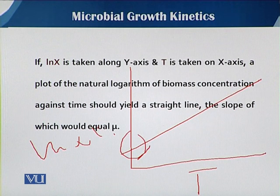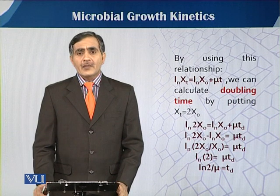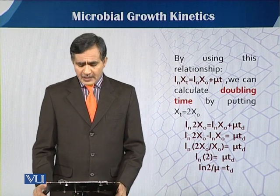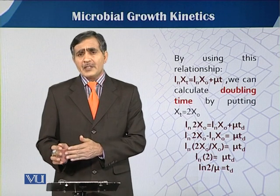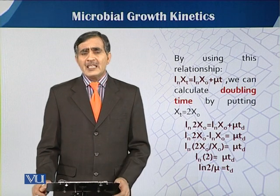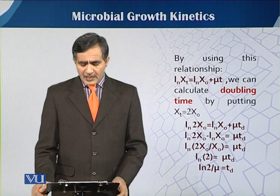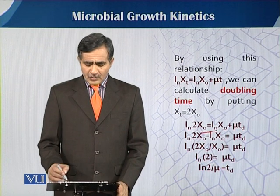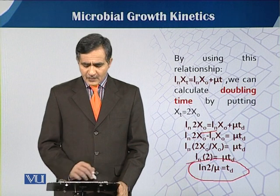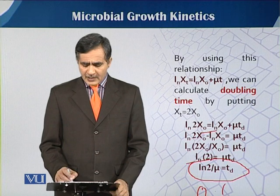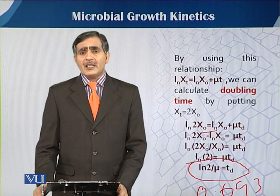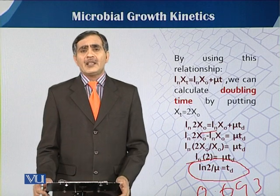The intercept of that line is a and the slope is b. By this we can easily calculate μ — the slope of the line is the specific growth rate constant. For the doubling time, we put X_t = 2X₀ into the equation. Since ln(2) = 0.693, if we know the specific growth rate constant μ of any organism, we can easily calculate the doubling time using this equation.